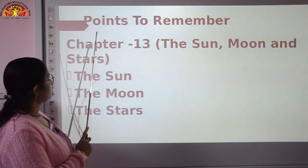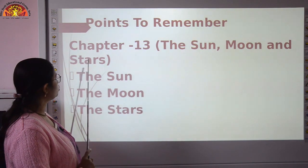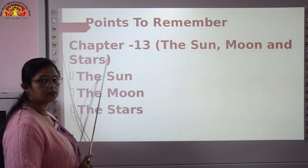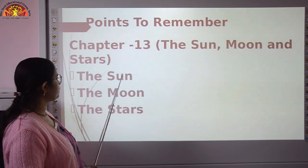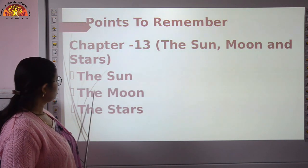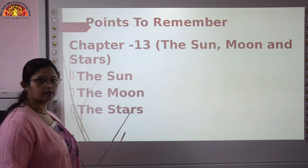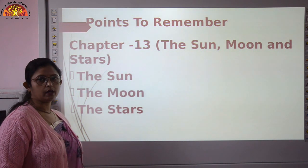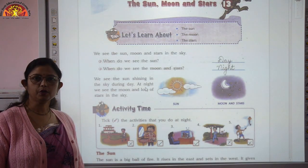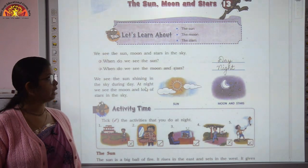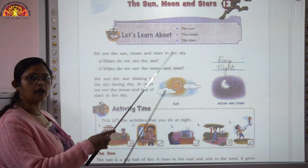Let us first start with chapter number 13, The Sun, Moon and Stars. So points to remember in this chapter are the sun, the moon and the stars. Now we will come to your book. All of you open your books, page number 106, chapter number 13, The Sun, Moon and Stars.